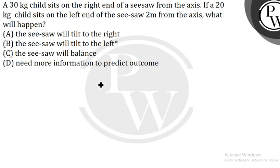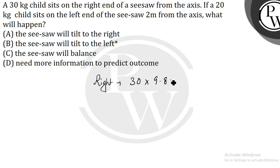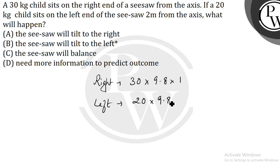For the child sitting on the right side, the torque will be 30 × 9.8 × 1, and for the child sitting on the left side, it will be 20 × 9.8 × 2.